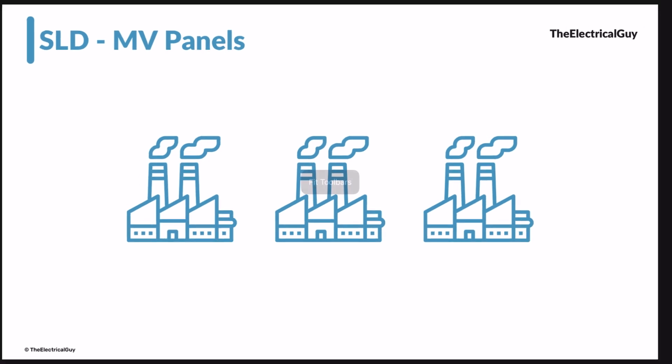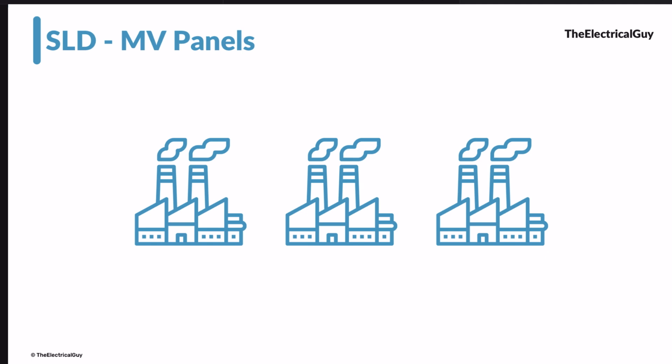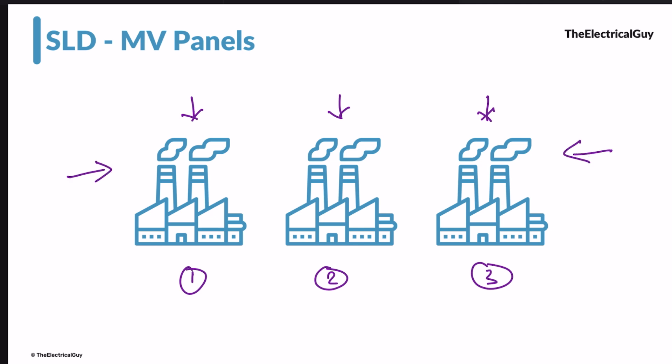Imagine I have three different manufacturing units as you can see on your screen — this is one, this is the second, and this is the third one. I have two requirements: first, I want to give a dedicated supply to all three factories — dedicated feeders for each. Second, I want supply redundancy, meaning if one supply fails I want another supply that can feed my factory, so I will not lose any production hours or money.